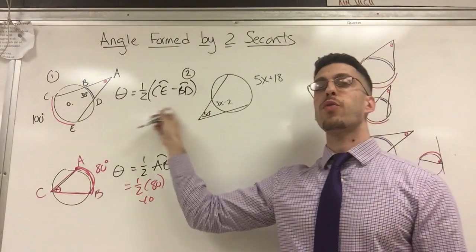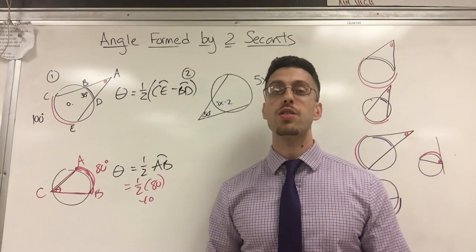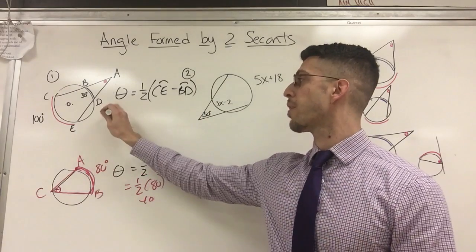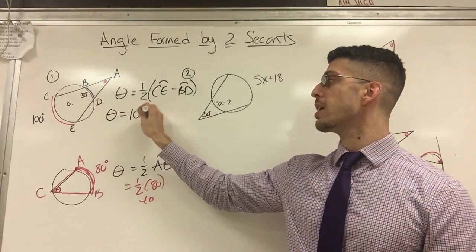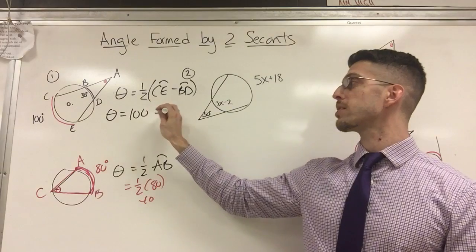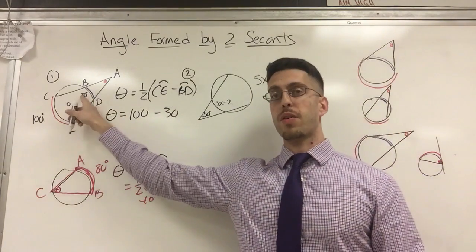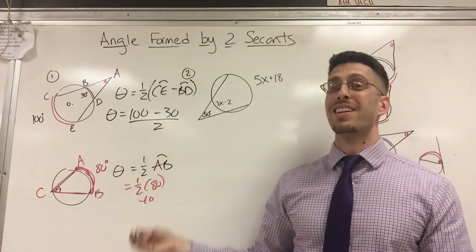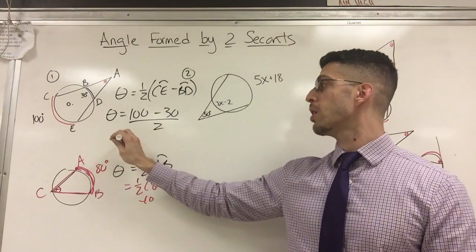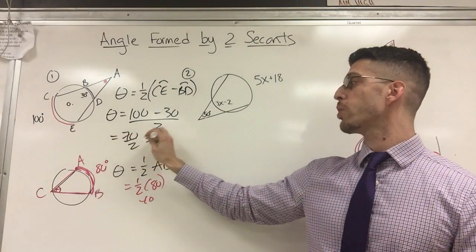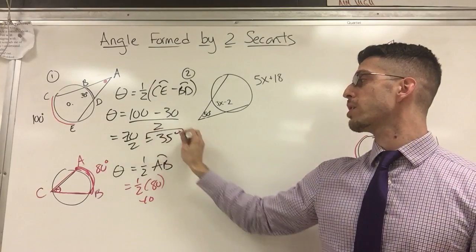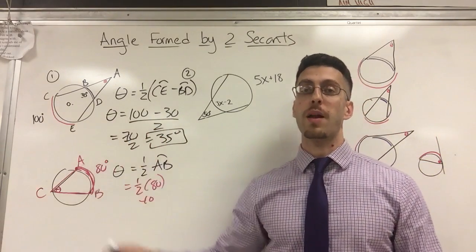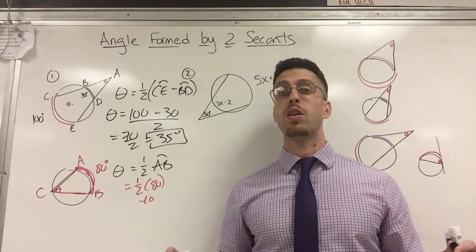And I don't really like to teach formulas because the letters always change. So just remember, big minus little, divide by two. Theta equals big, 100 degrees, minus little, 30 degrees, divide by two. Instead of saying one half, I just say divide by two. That's actually easier for me. So that's 70 divided by two, which is 35 degrees. And you are done. Most questions are pretty straightforward. Simple as that. Big minus little, divide by two, you're done.